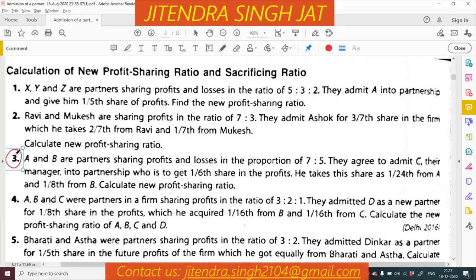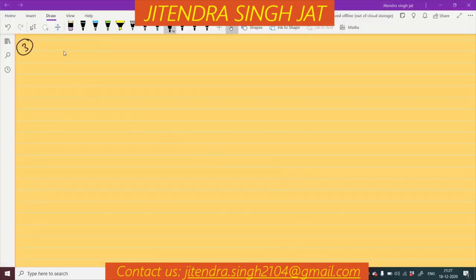Number 3. A and B are partners sharing profit and losses in the ratio of 7 is to 5.